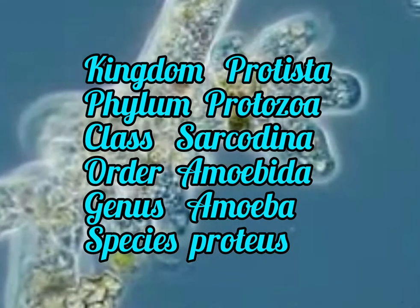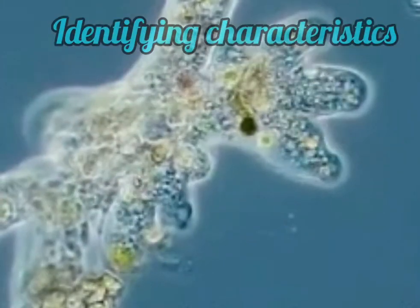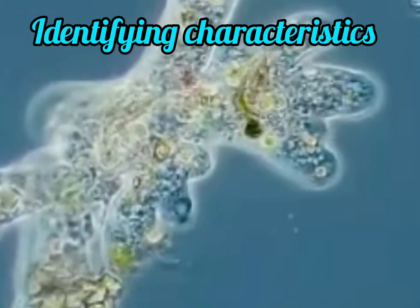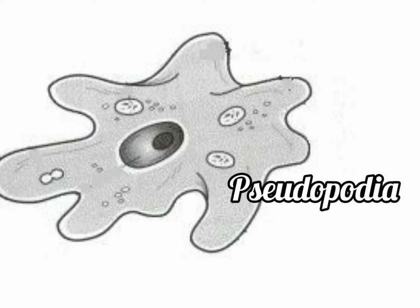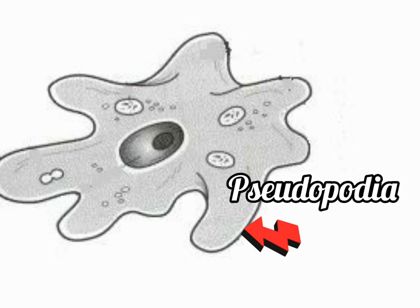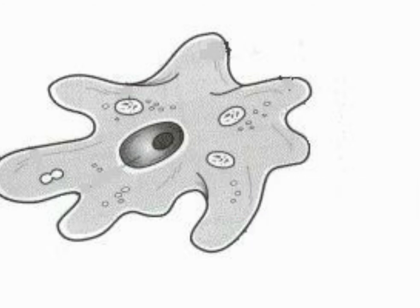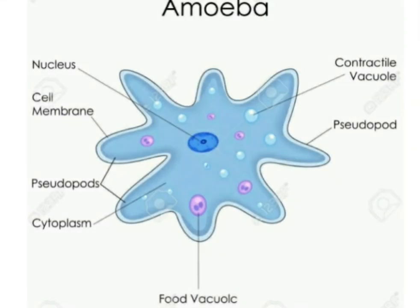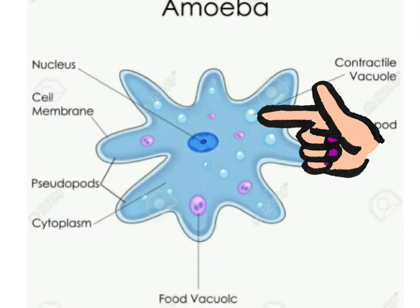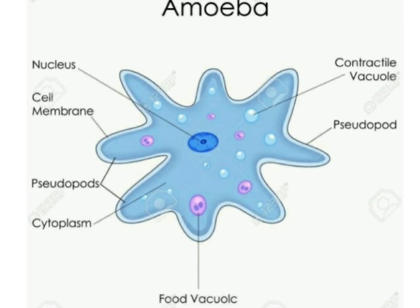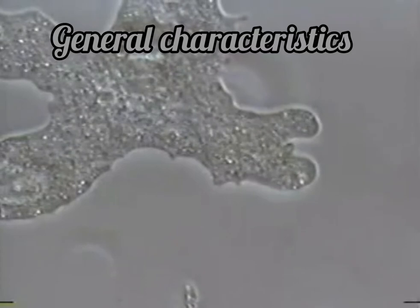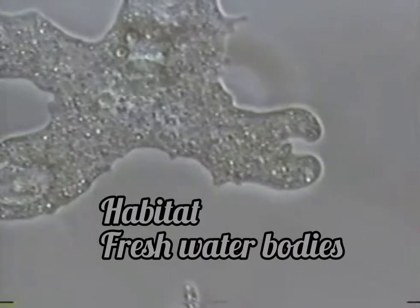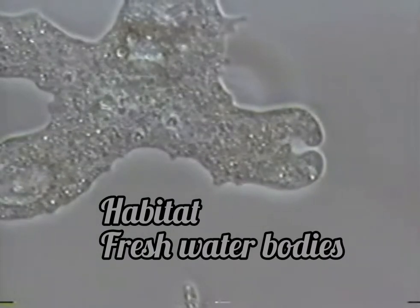What are the identifying characteristics of this organism? This organism is unicellular with irregular body shape. There is presence of finger-like projections known as pseudopodia. There is a contractile vacuole that helps in the ejection of digested food materials. Amoeba are found in ponds, lakes, streams, ditches and other places which have plenty of decaying organic matter.